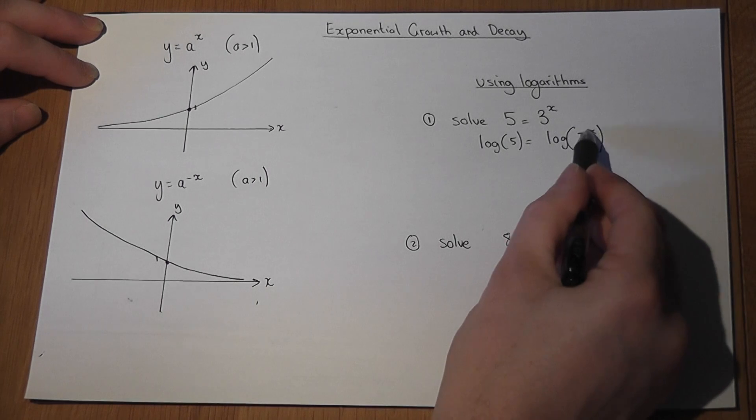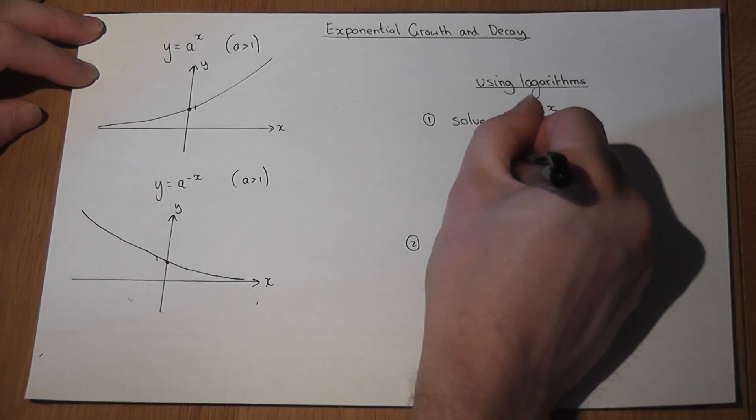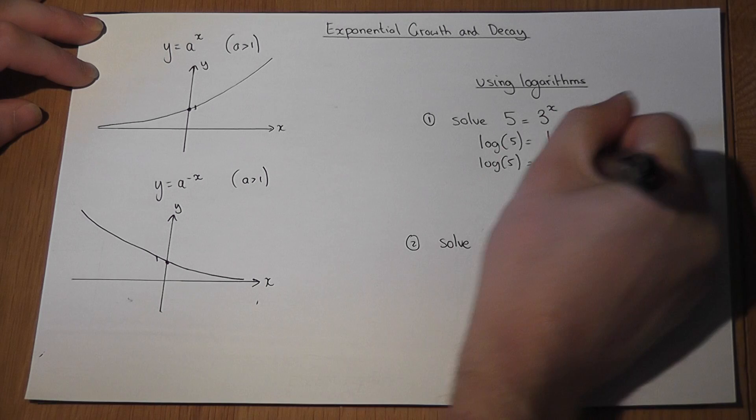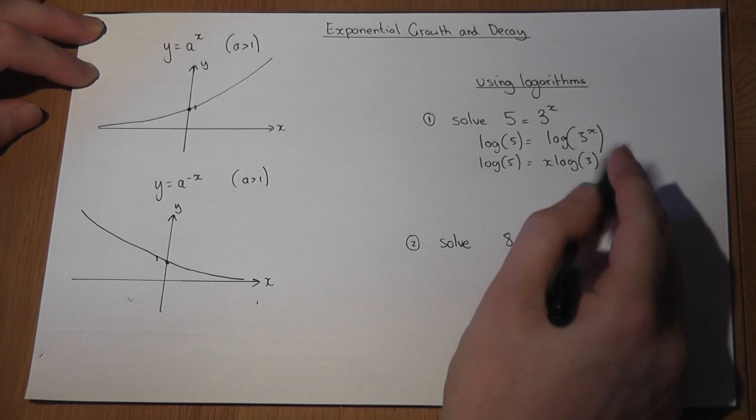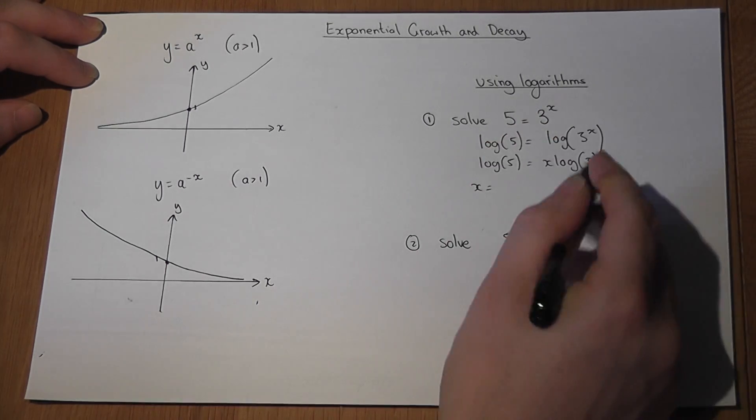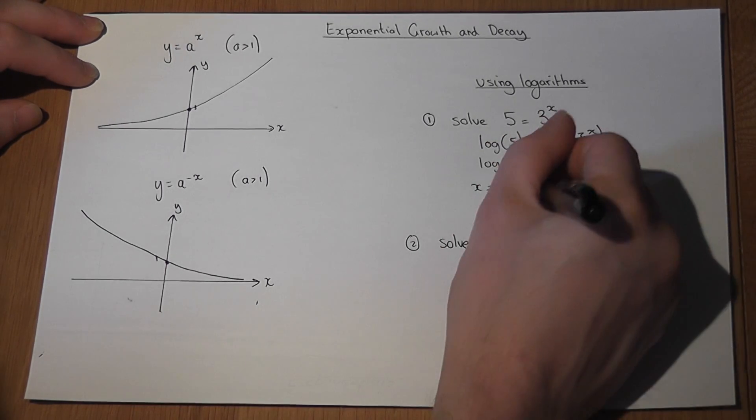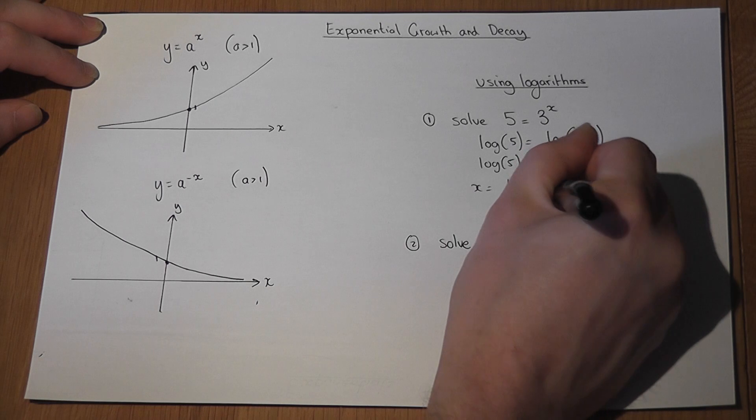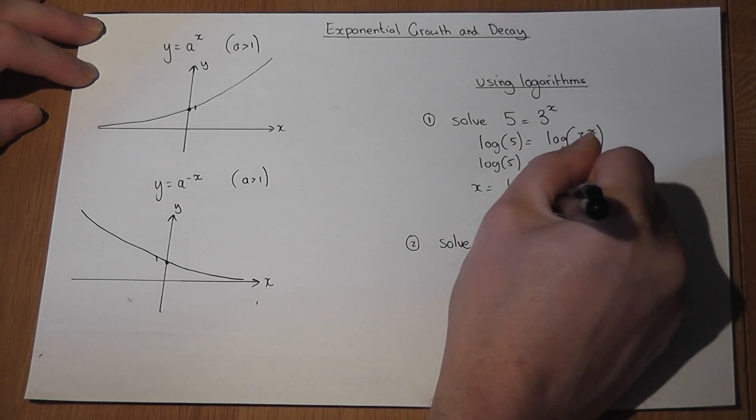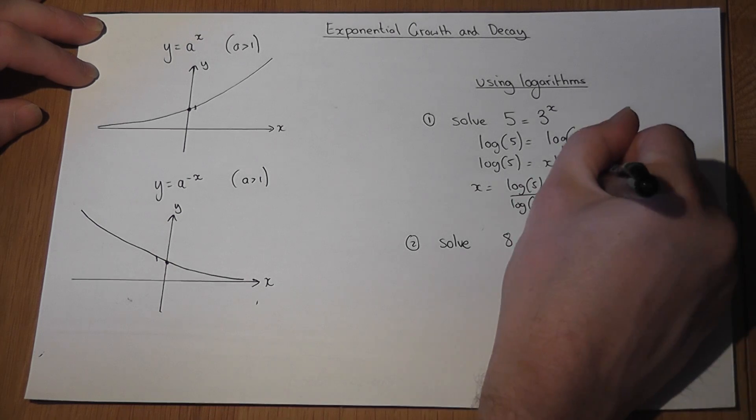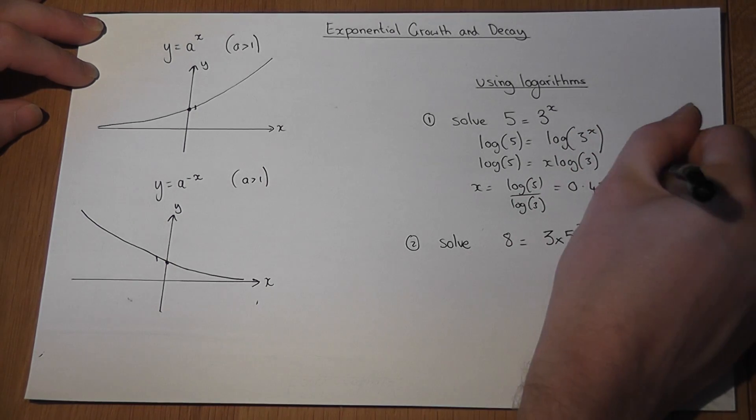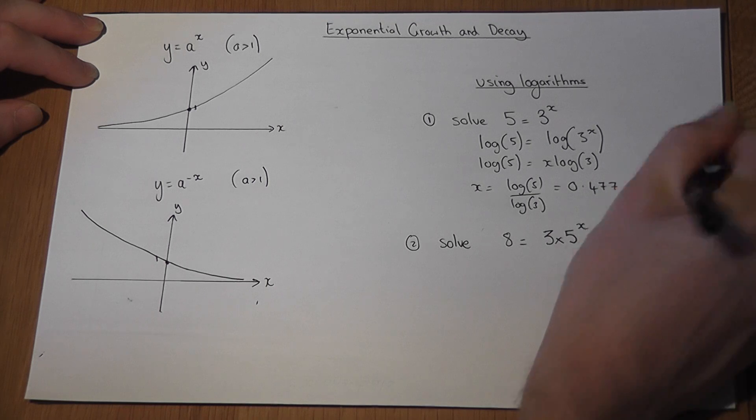What happens is the power falls down adjacent to the logarithm. So to find x, we have to work out what log 5 over log 3 is. You enter that into your calculator, and you get x is 0.477 to 3 significant figures.